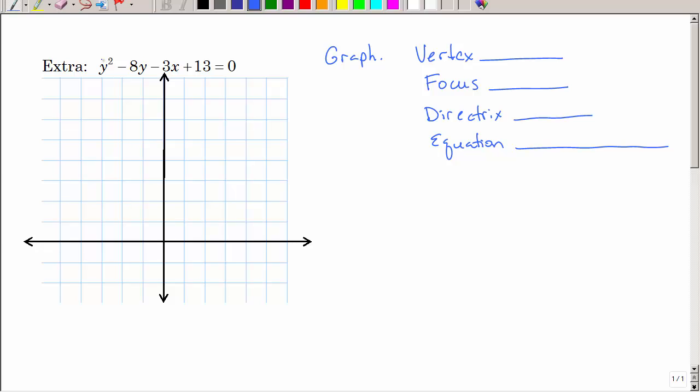Here is just one more example of completing the square. We need to be able to graph this equation, find the vertex, the focus, and the directrix, and write that equation in standard form. So we really need to start here in order to answer these other questions. This is not in standard form, it's in general form, and the y is squared. So we need to rewrite it and complete the square.